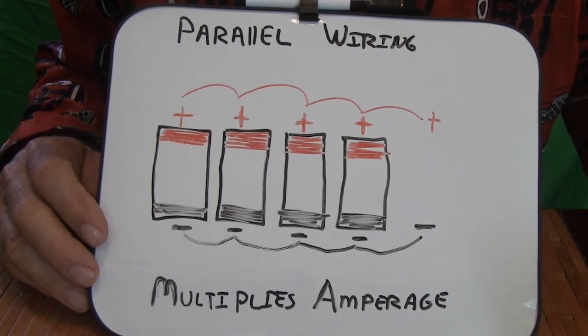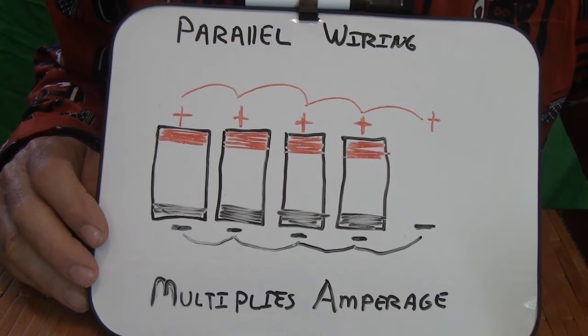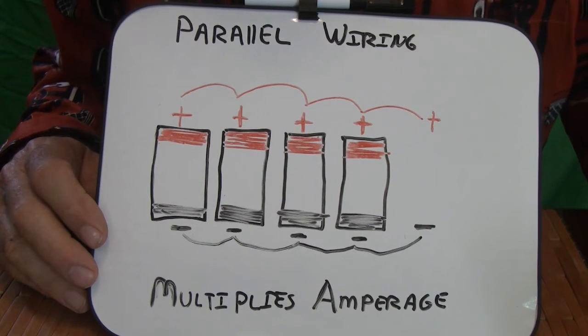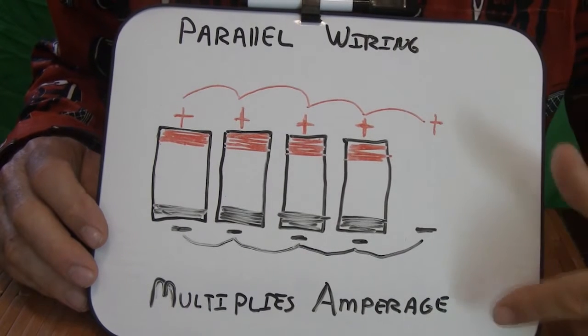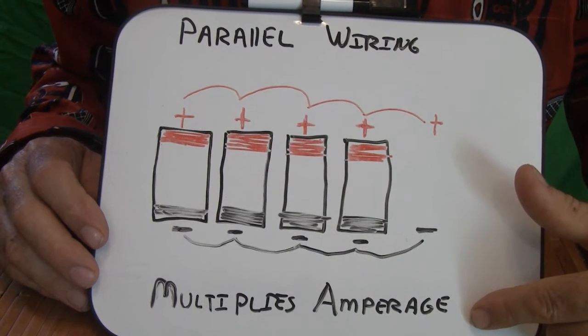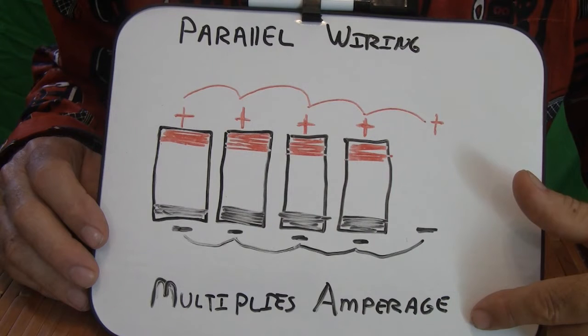Let's start with parallel wiring because parallel wiring is probably easier to understand. Parallel wiring multiplies amperage. It does not multiply voltage. Series wiring multiplies voltage.